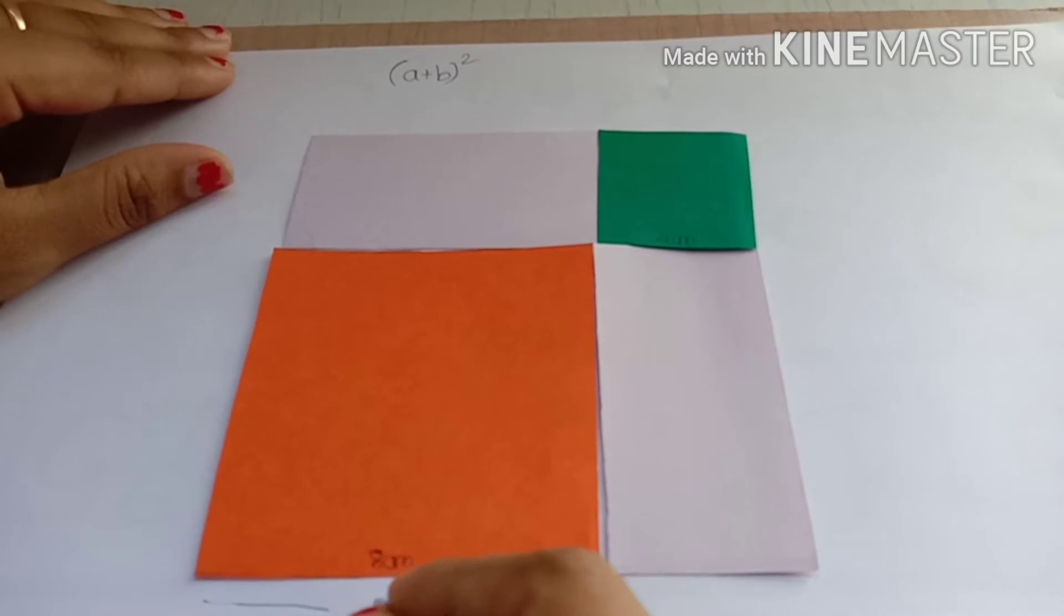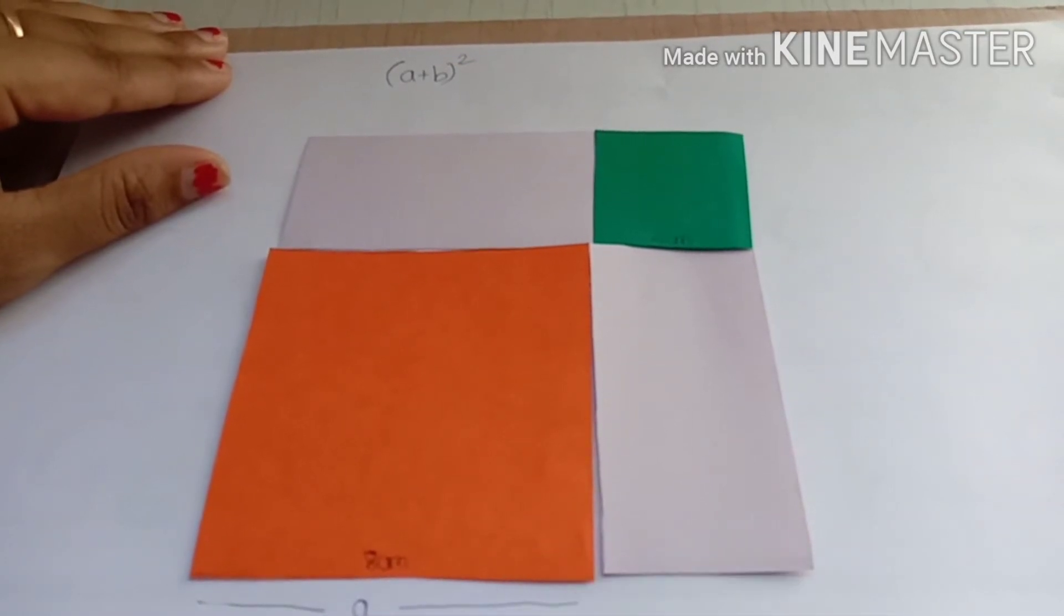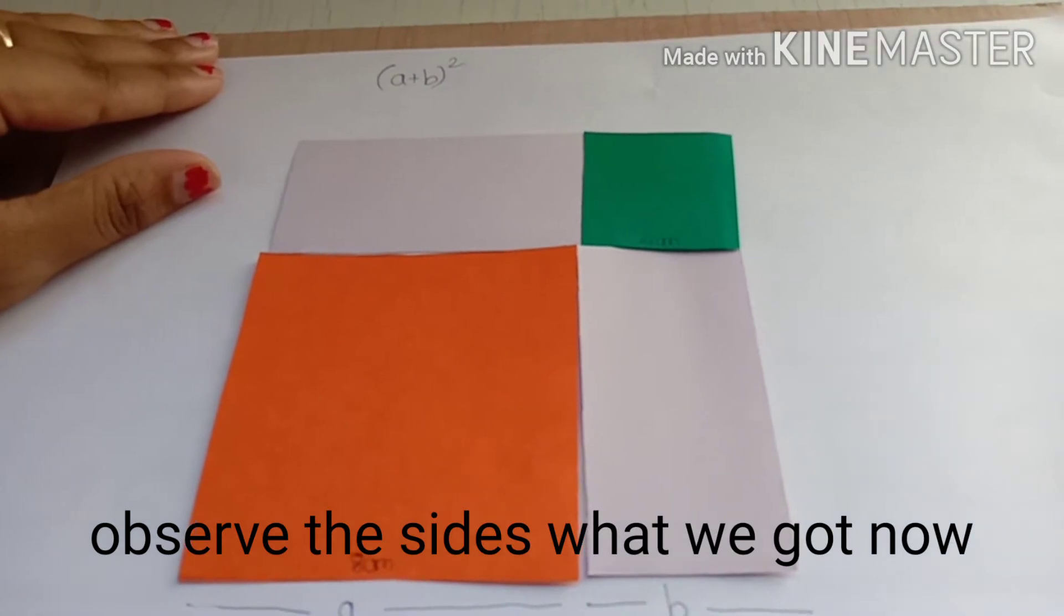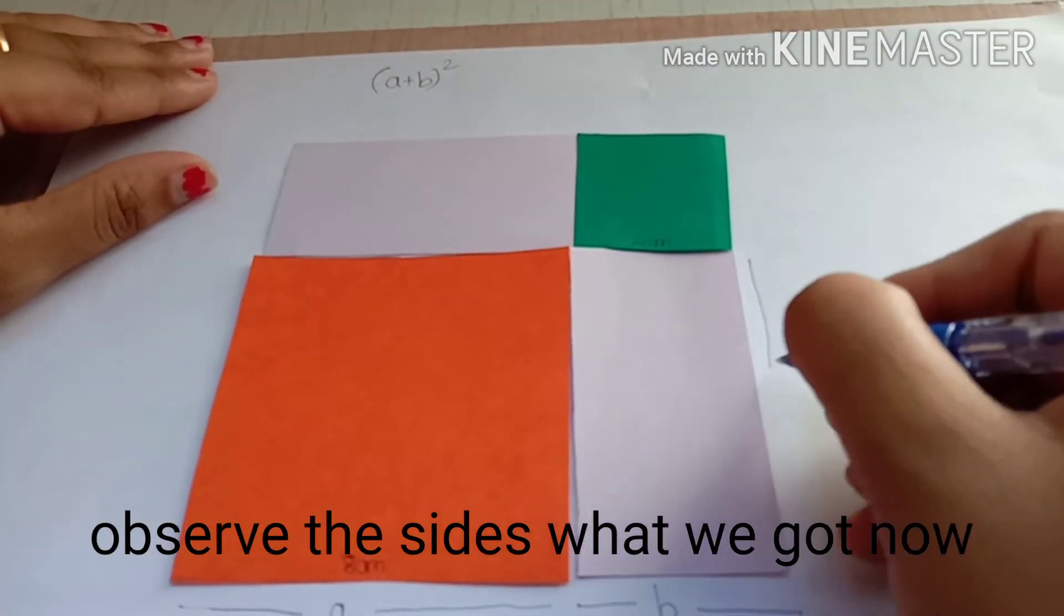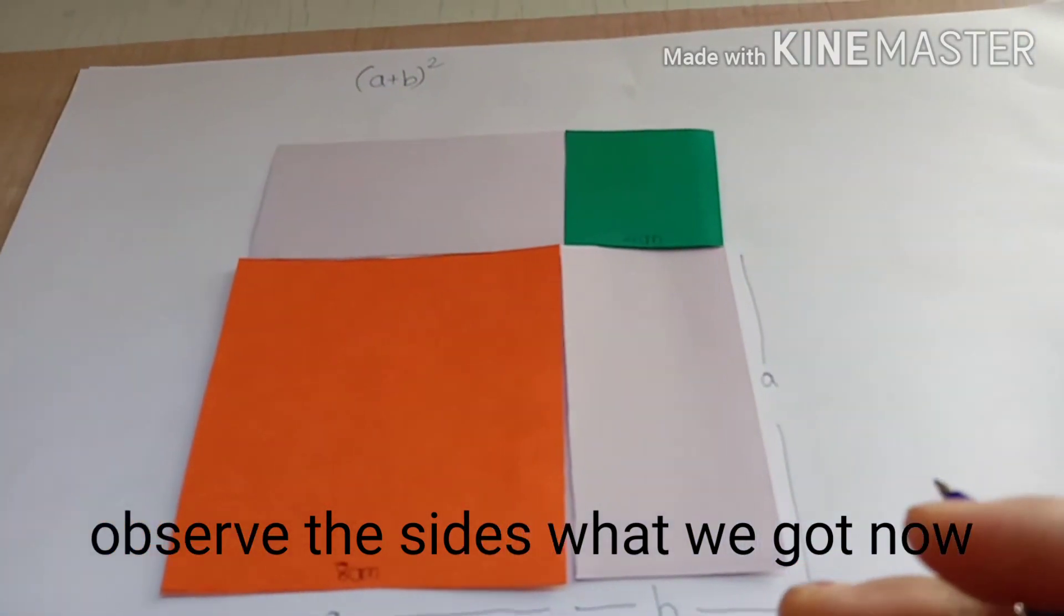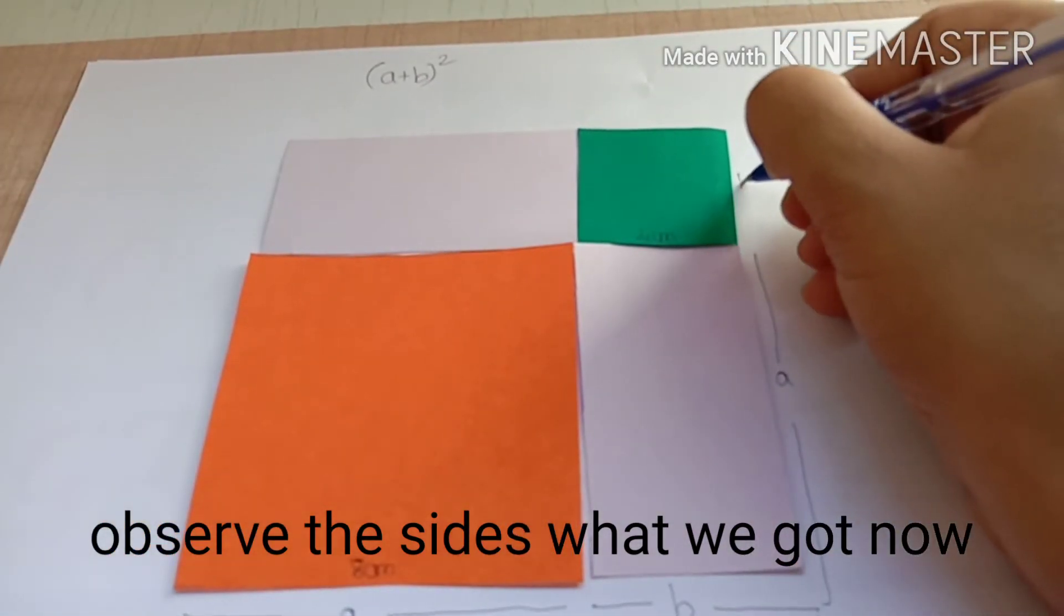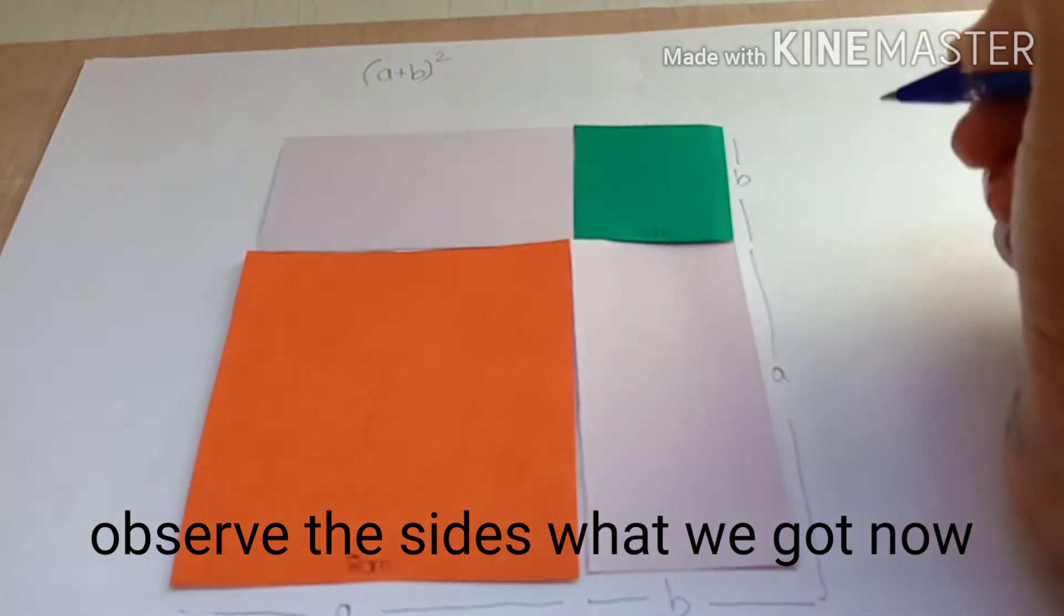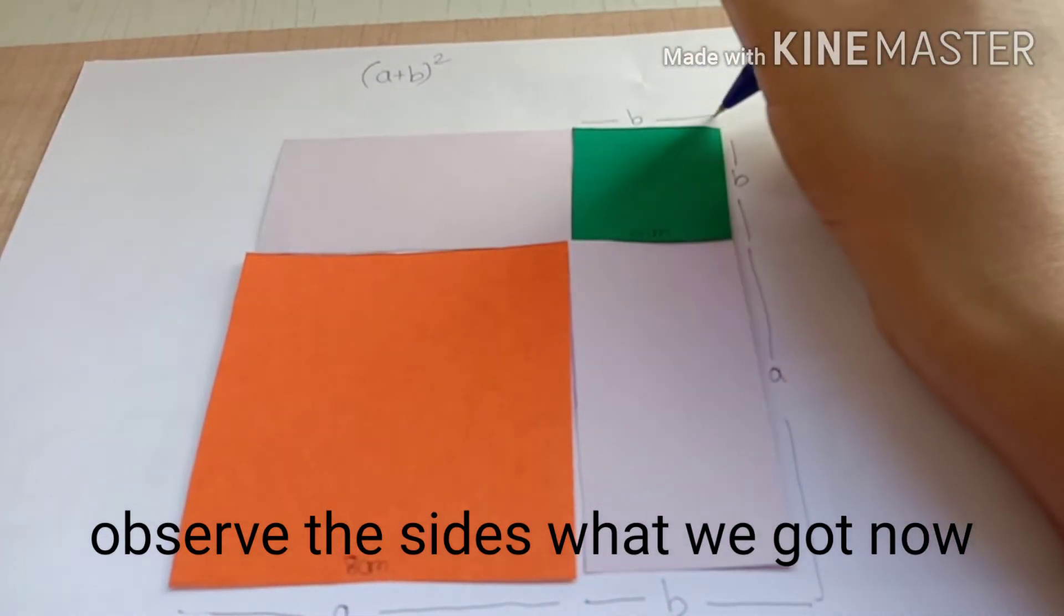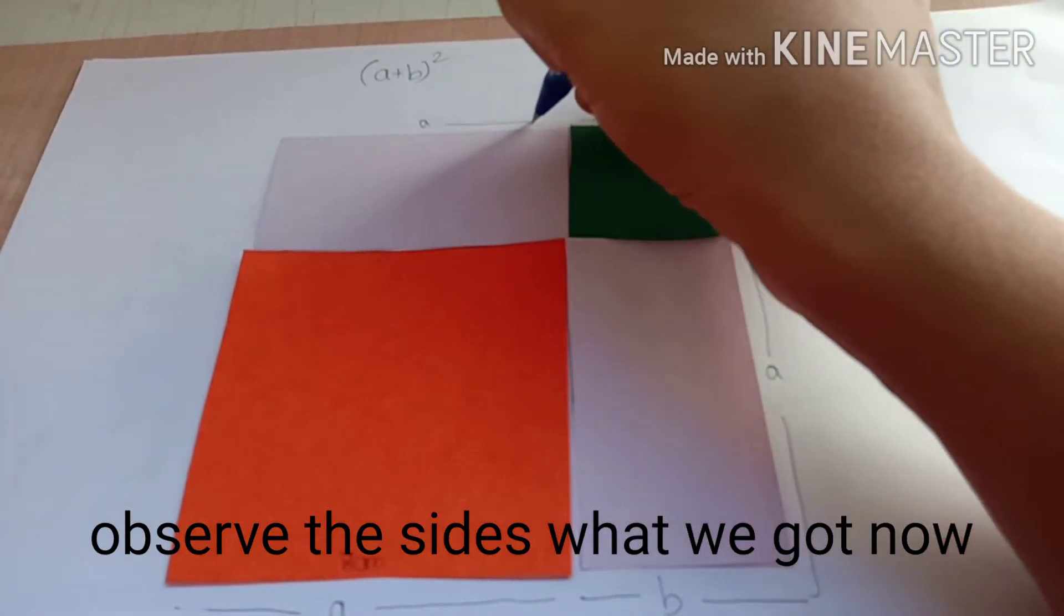Okay, this is b since it is 4 centimeters, right? And this will be 8 centimeters, so this is a. And this will be b again, this is 4 centimeters. So this will be b, this will be a.